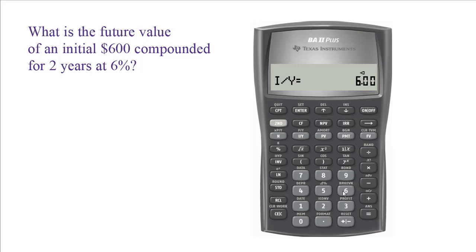Enter 600 as a negative in PV. Always remember that PV value is a negative number in a financial calculator.